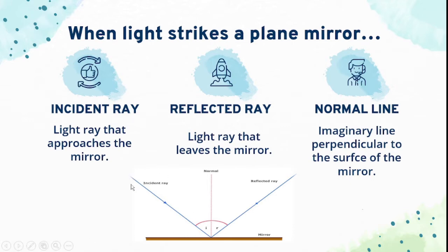This line that moves or approaches the mirror is what we call the incident ray, while this line that lifts the mirror upon hitting the plane mirror is what we call the reflected ray. And they are at the same angle relative to the normal line.